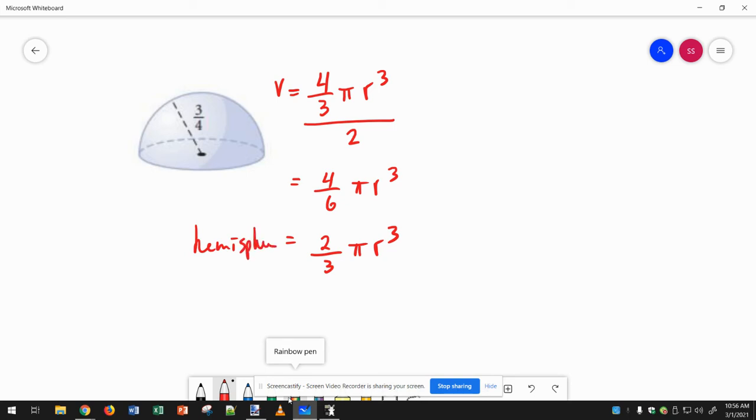And that's 2/3 π r³. So then 2/3 times π times (3/4)³.